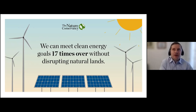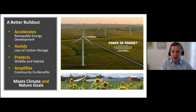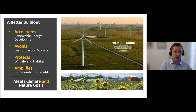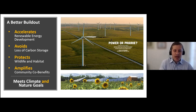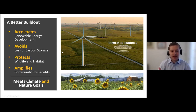So it's really about how we can incentivize deployment in low-impact lands rather than just building where the wind blows most or the sun shines most. That's one of the advantages with renewable energy — the resource is really everywhere. If we do that and build onto lower-impact lands, we see an opportunity for a better build-out — one where we don't have to ask whether we get power or prairies, because we can have both. We can have a transition that accelerates renewable energy deployment by avoiding conflicts from building in key wildlife areas, and also avoid the loss of carbon storage, protect wildlife habitats, and amplify the community co-benefits.